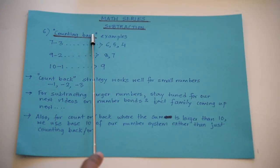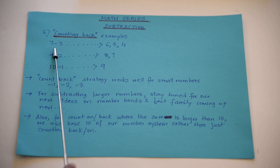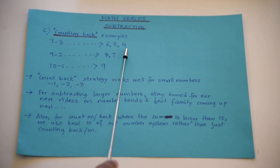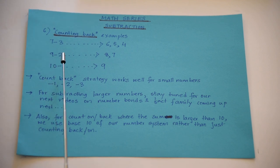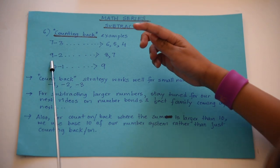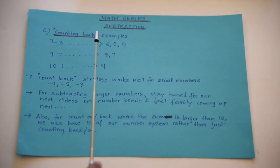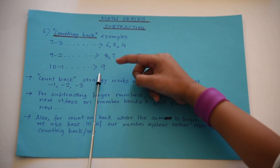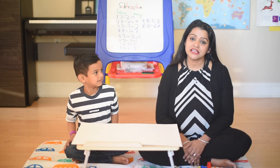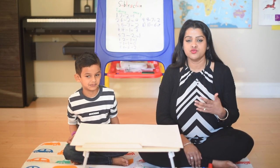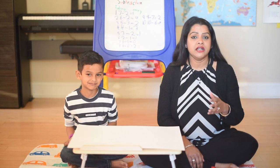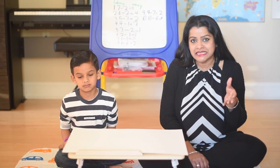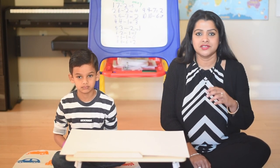Let's do some examples of counting back. Seven minus three: count back three numbers from seven — six, five, four — so the answer is four. Nine minus two: count back two from nine — eight, seven — so the answer is seven. Ten minus one: count back one from ten — nine — so the answer is nine. The counting back strategy works well for smaller numbers like minus one, minus two, and minus three. For subtracting larger numbers, stay tuned for later videos on number bonds and fact families.